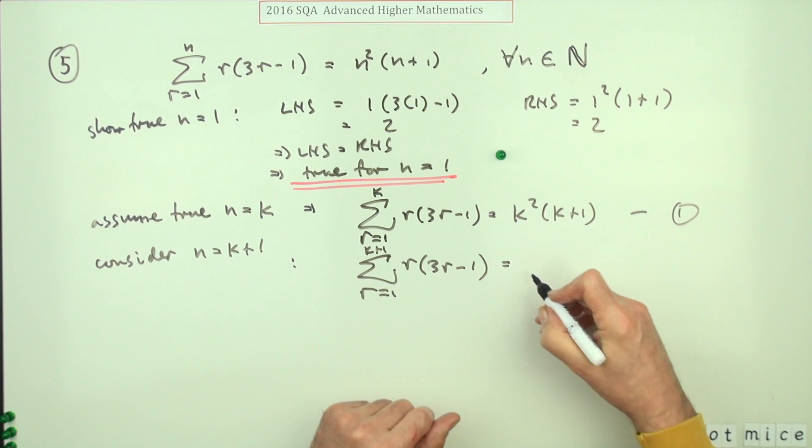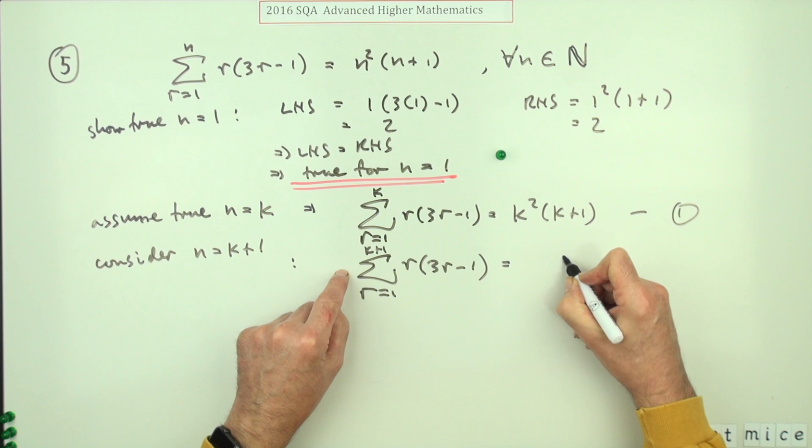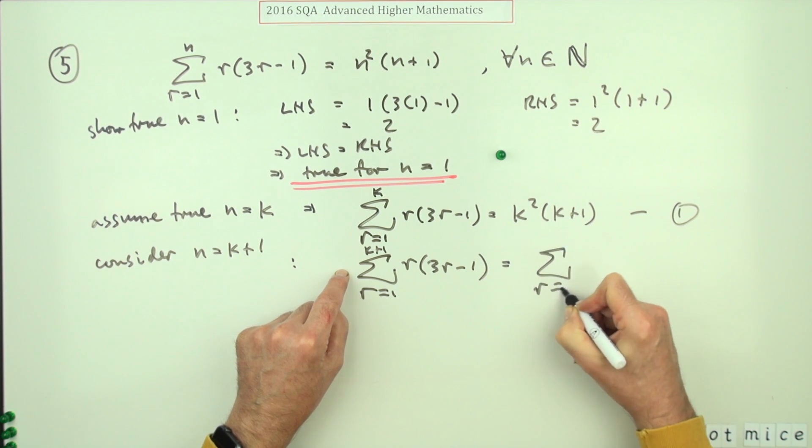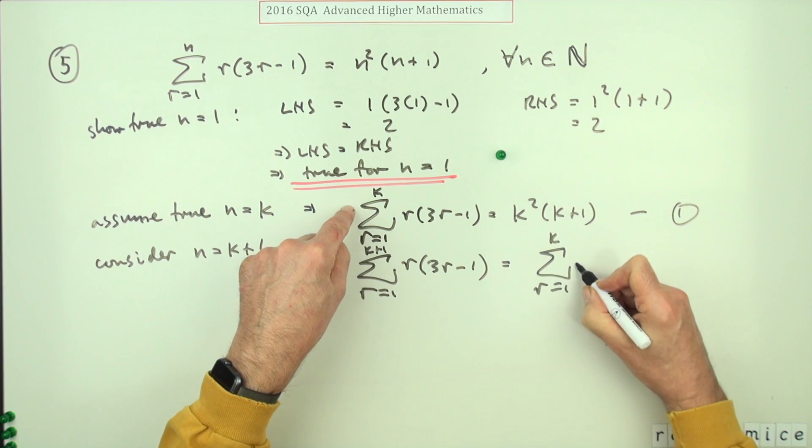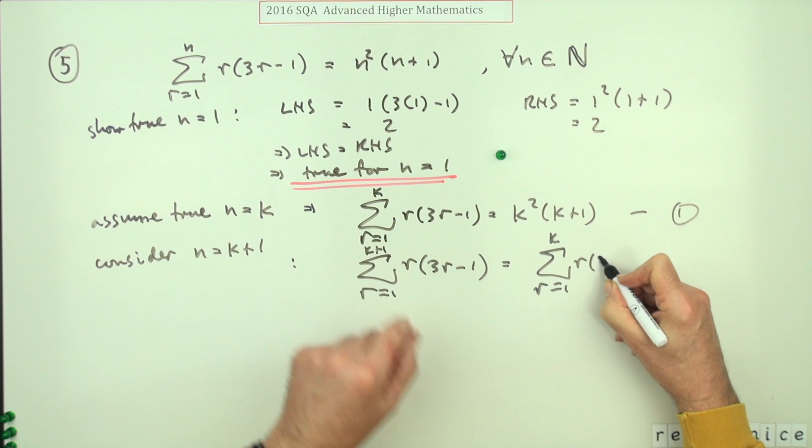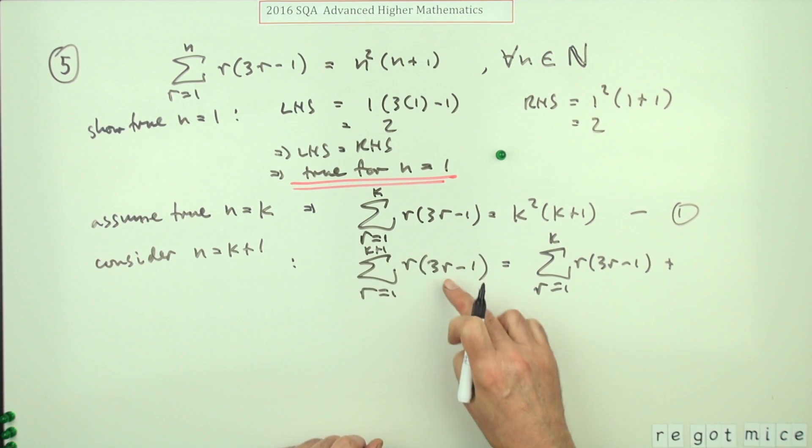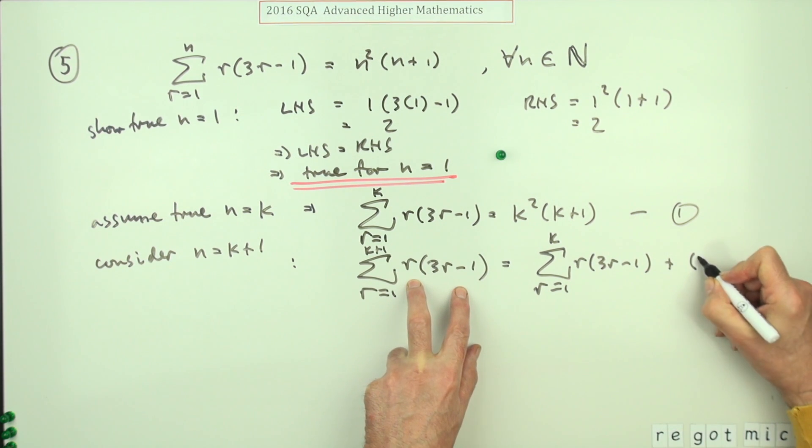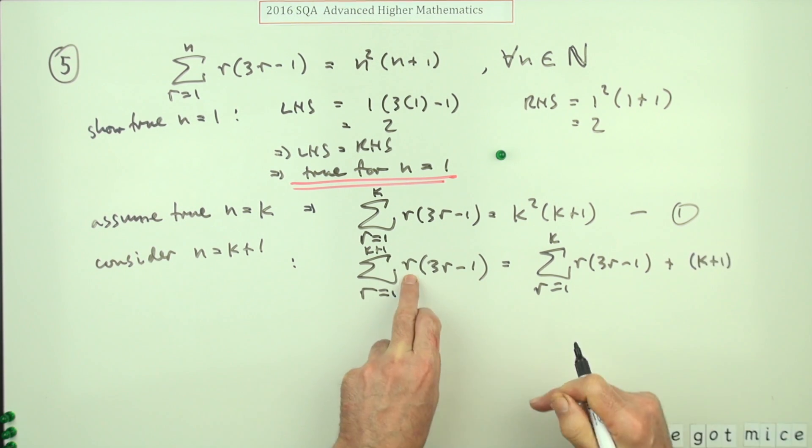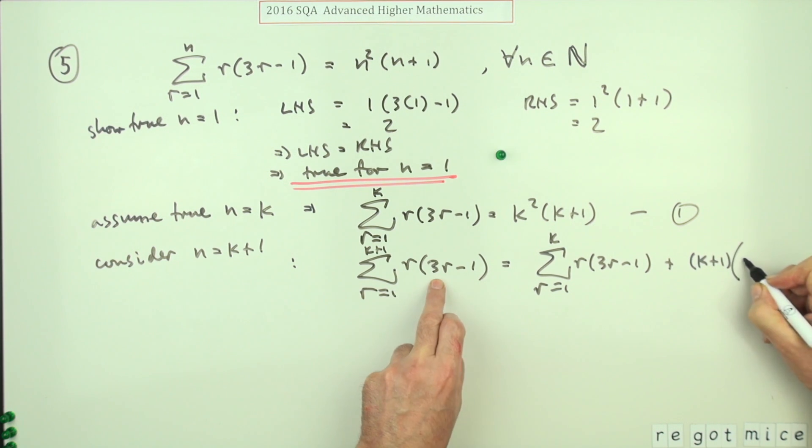So that means it's going to be this part, r equals one to k, in other words just the part you had before of r(3r-1), but plus the extra last term when finally r becomes k+1. So r becomes k+1, so it's (k+1) × 3(k+1) - 1. And only now after you've written all that out do you get your second mark.